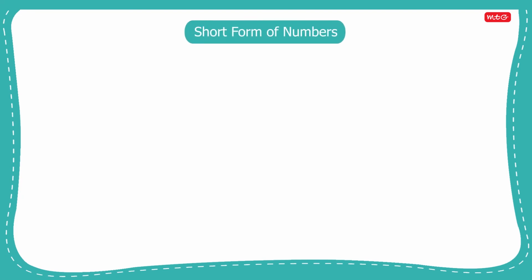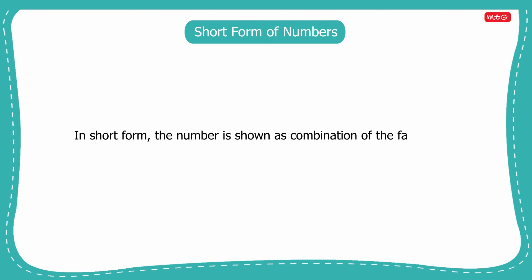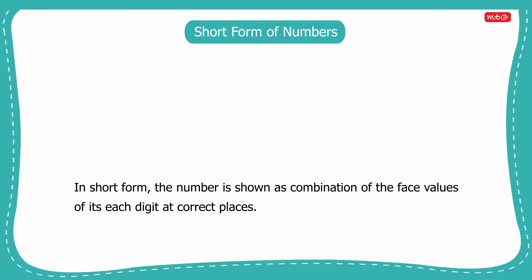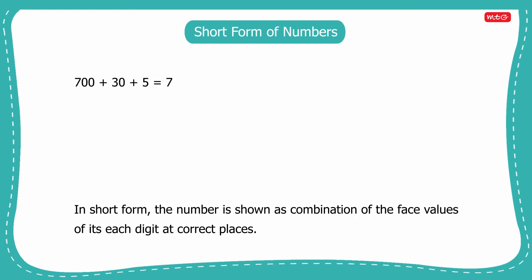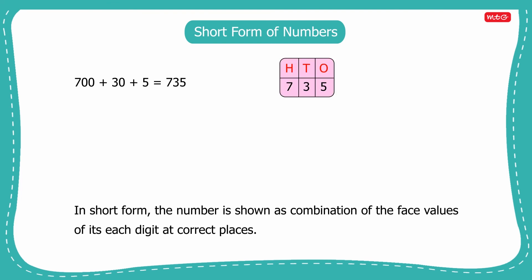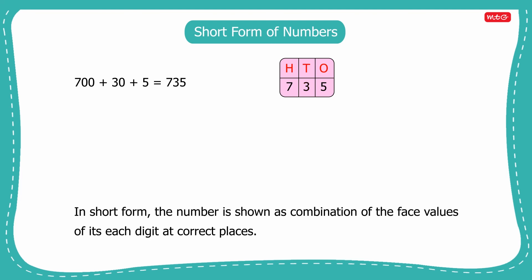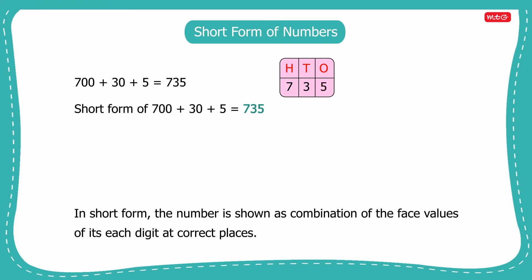Now we will learn about short form of numbers, also known as standard form. In short form, the number is shown as a combination of the face values of each digit at correct places. For example, 700 plus 30 plus 5 — here we have 7 at hundreds place, 3 at tens place and 5 at ones place. So its short form is 735.